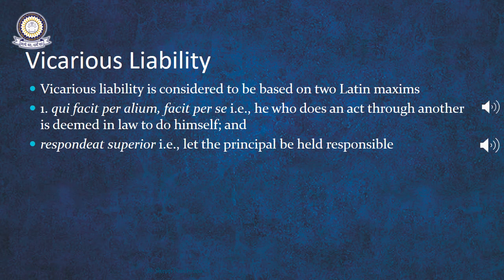Vicarious liability is based on two Latin maxims. The first is qui facit alium facit per se, that is, he who does an act through another is deemed in law to do it himself. So in case of a master-servant relationship, the master who does his act through the servant is liable for the acts of the servant. Similarly, if you look at the partnership relationship, if one partner does an act for the other, the other partner can also be held liable because one who acts through another is deemed in law to do it himself.